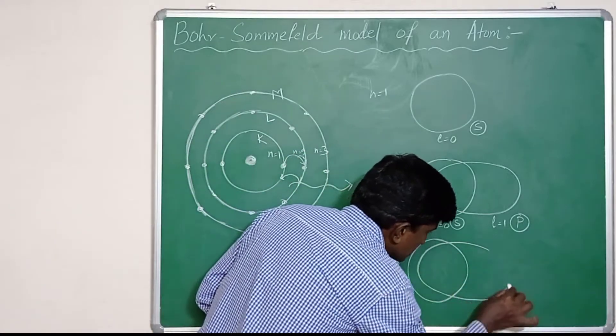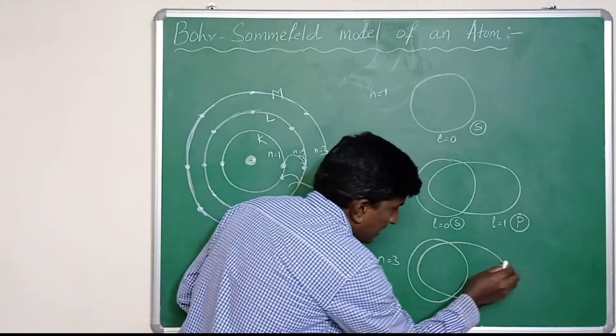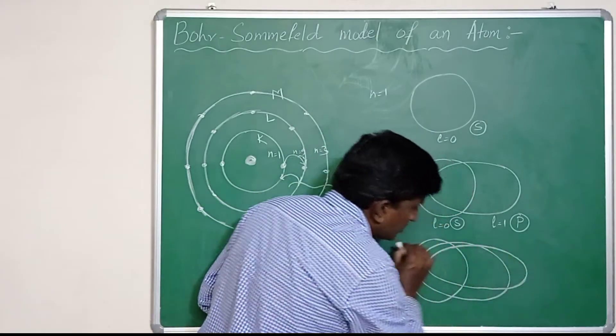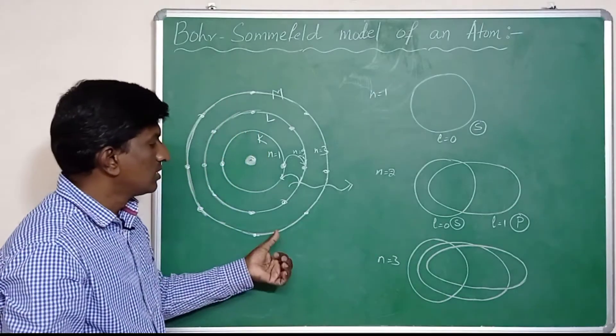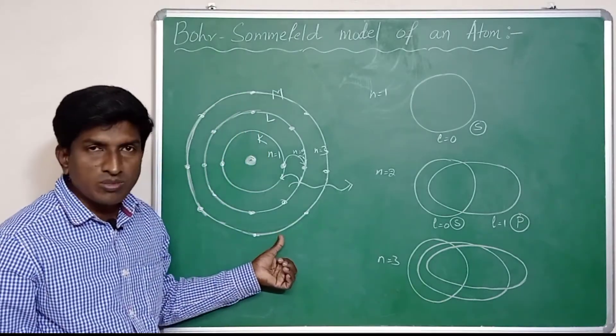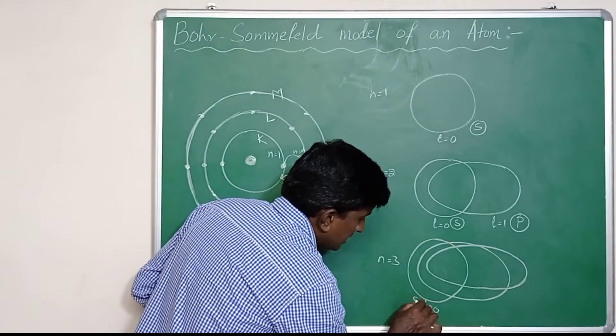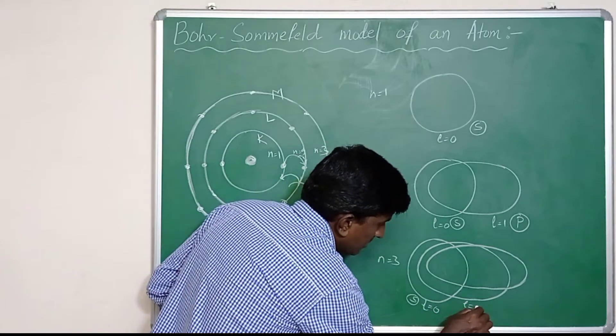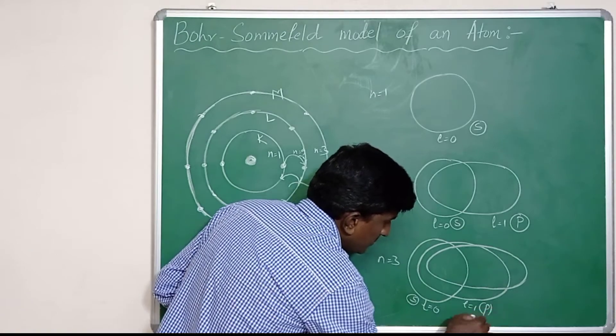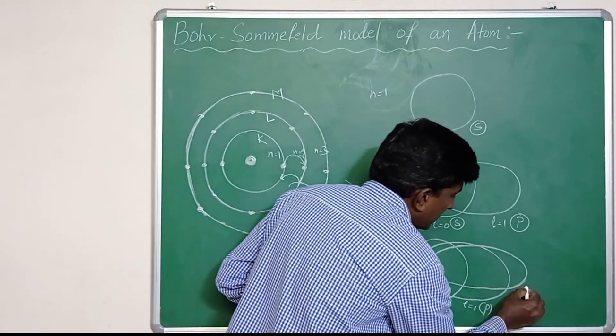Two elliptical orbits are added to the third Bohr's orbit by Sommerfeld. Here l equal to 0 is s orbital, l equal to 1 is p orbital, and l equal to 2 is d subshell.